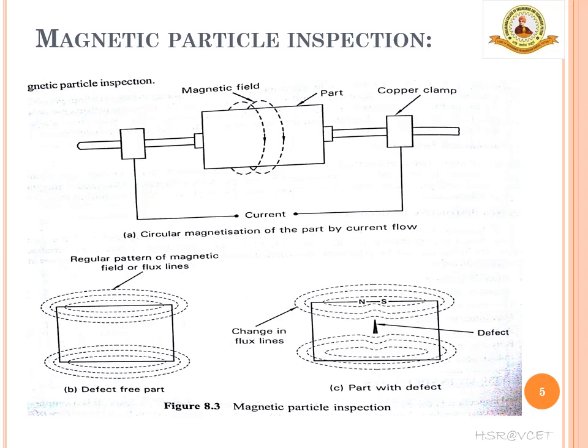Before going to magnetic particle inspection, we will discuss visual inspection first. Visual inspection is the most widely used method of all non-destructive tests. It is a simple test that consumes less time but is useful only to detect the presence of defects on the surface of the fabricated part. The part is illuminated with light and examined with the naked eye, sometimes with a magnifying lens or a low-power microscope. Visual inspection provides good information about surface defects like cracks, porosity, fusion, edge melt, incomplete penetration, etc.